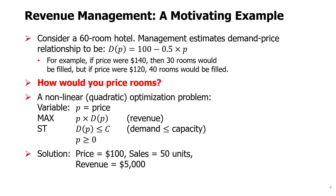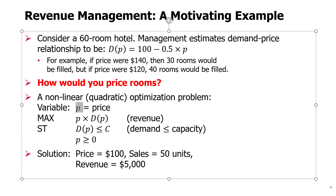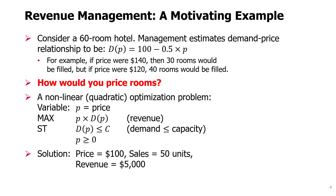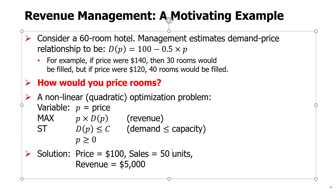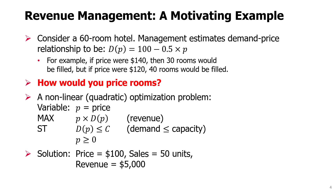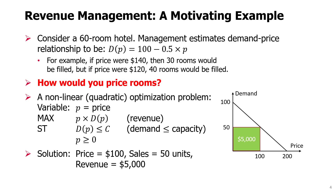Knowing that demand should not exceed capacity allows us to formulate a nonlinear optimization problem where price is the decision variable and revenue is defined as price times demand — the quadratic part. We add a constraint that demand should not exceed capacity 60, and we ensure price is not negative. The optimal solution of this problem is still price $100, sales equal to demand of 50, and revenue of $5,000.